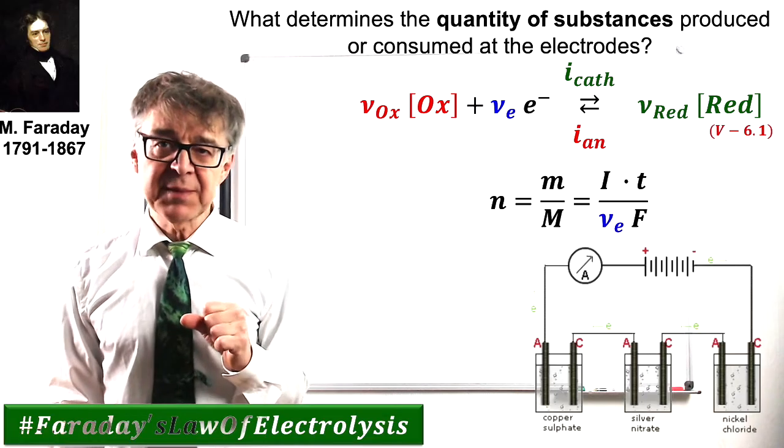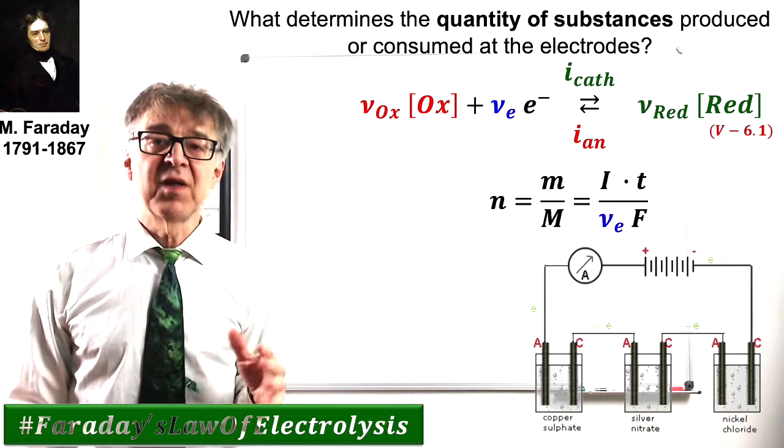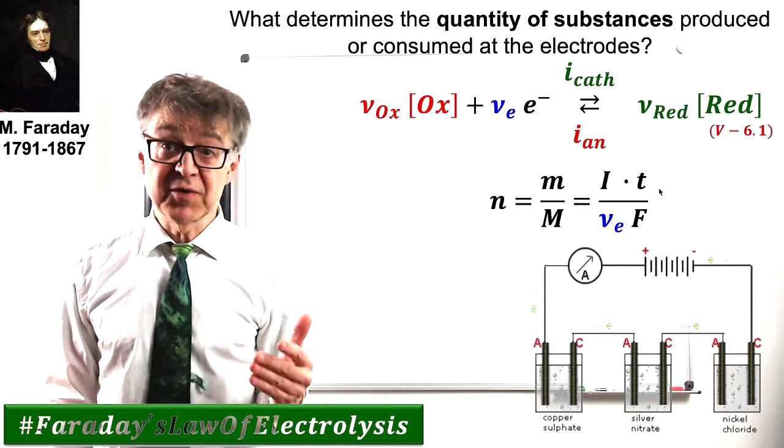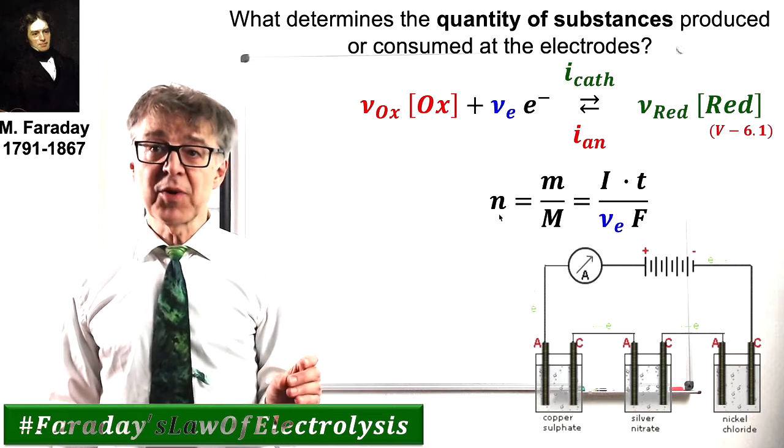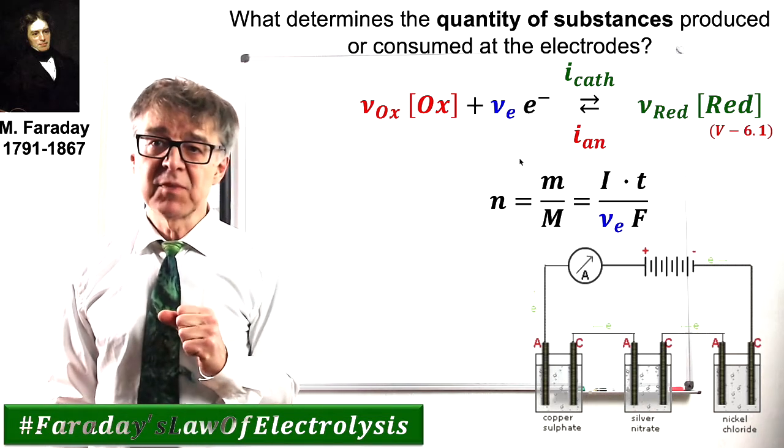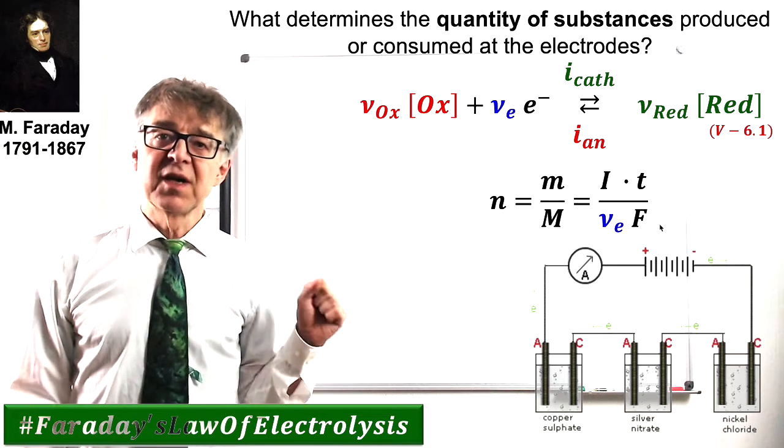The amount of material produced or consumed during an electrochemical reaction is directly proportional to the average current multiplied by the total time. N equals I times T over nu E times F.